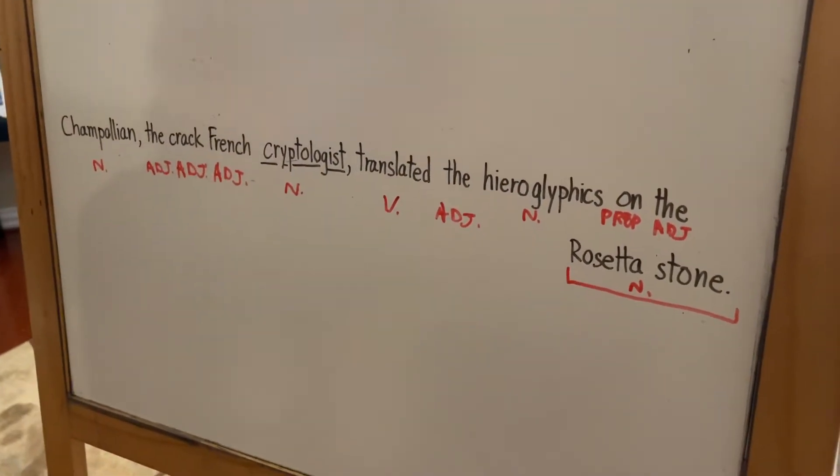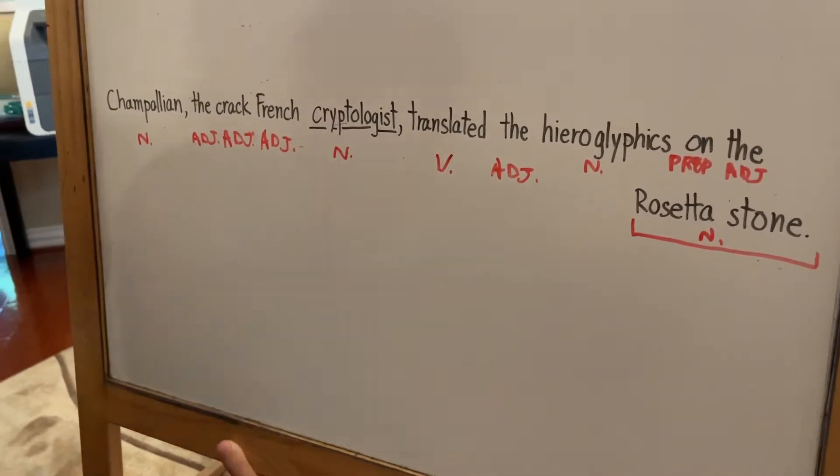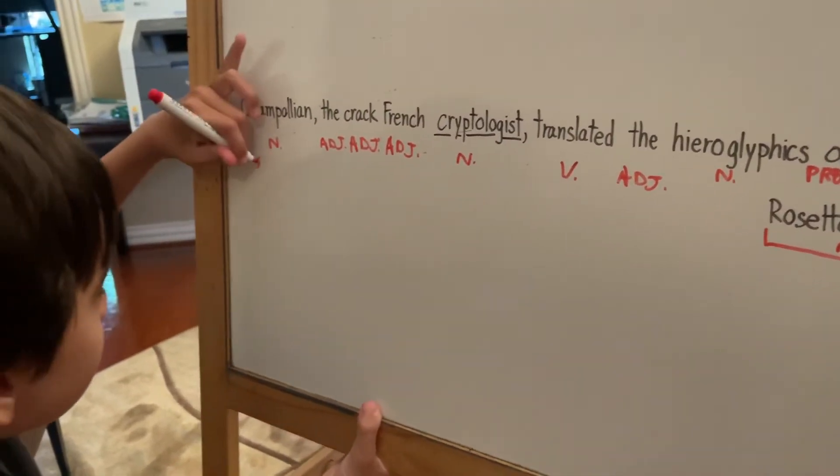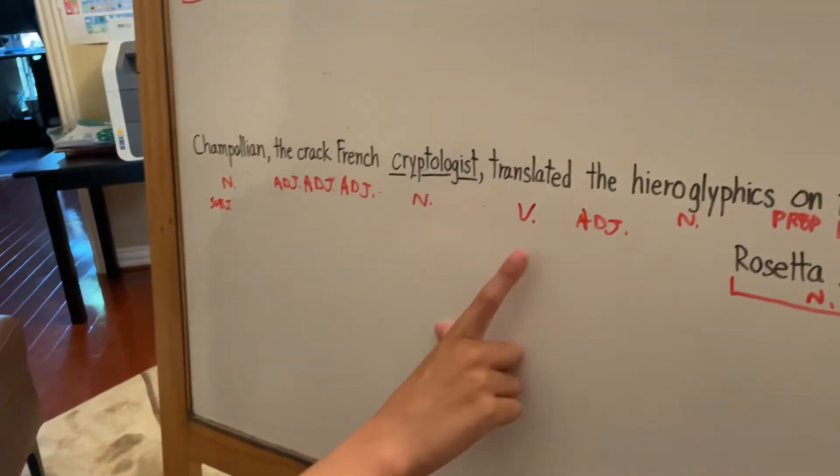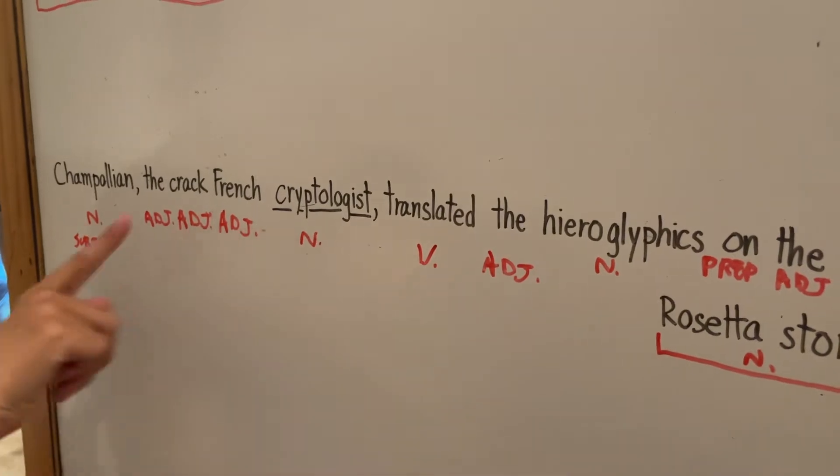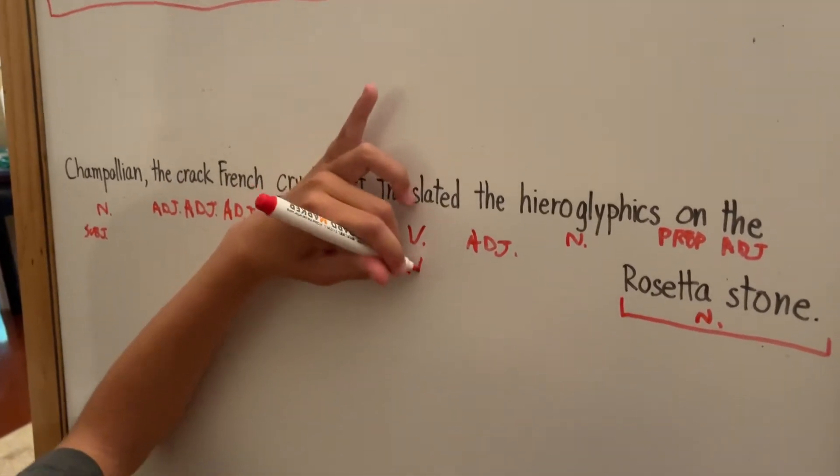Now we're going to move on to parts of sentence. Here we go. Trampoleon is our noun subject. And then translated is our AVP because it's what Trampoleon did—he translated. We have an action verb predicate.